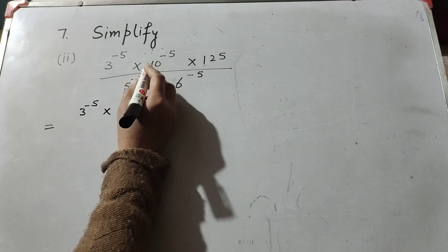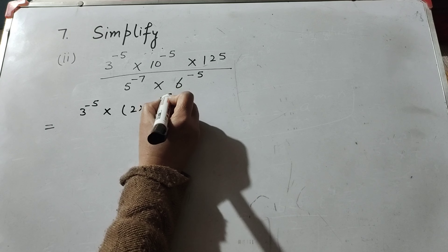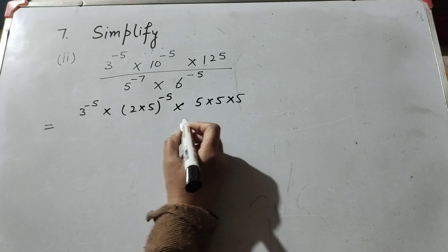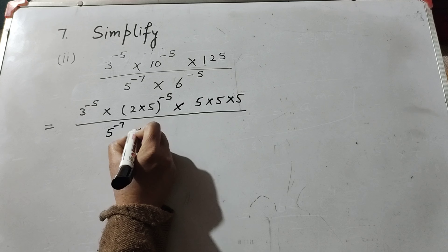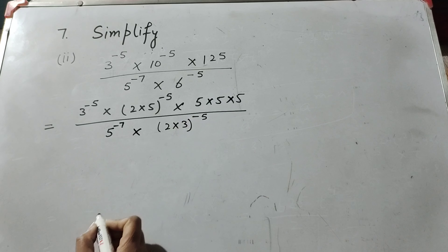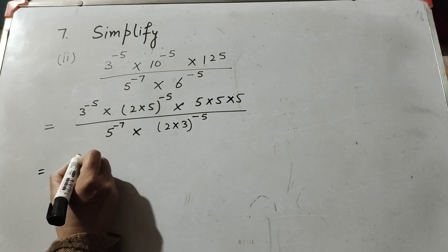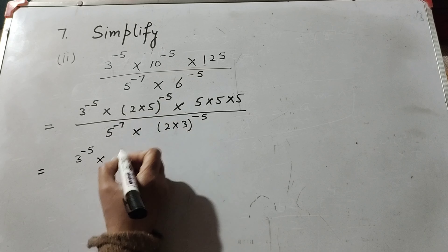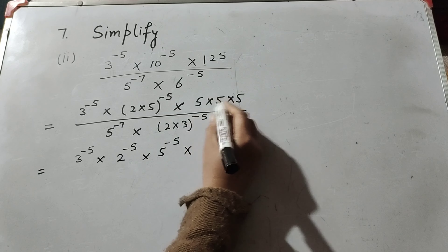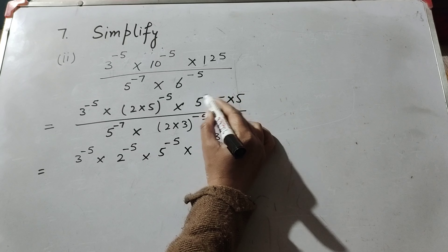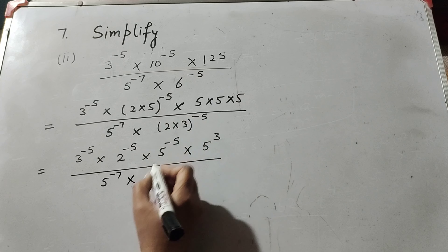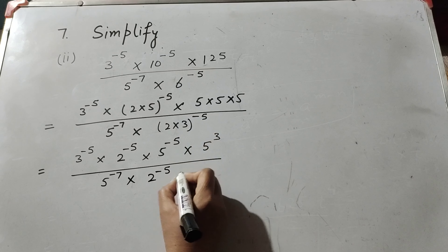It is equal to 3 raised to power minus 5 into — we write 10 as 2 multiplied by 5, raised to power minus 5 — into 6 raised to power minus 5. We write 6 as 2 multiplied by 3, raised to power minus 5. And it is equal to 3 raised to power minus 5 into 2 raised to power minus 5 into 5 raised to power minus 5 into 5 raised to power minus 5. There is 3 times repeated multiplication of 5, so it is 5 raised to power 3, over 5 raised to power minus 7 into 2 raised to power minus 5 into 3 raised to power minus 5.